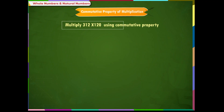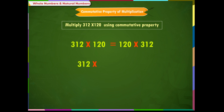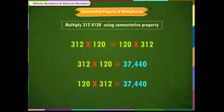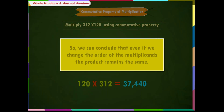Let us take an example. Multiply using commutative property: 312 into 120 is equal to 120 into 312, which equals 37,440. So we can conclude that even if we change the order of the multiplicants, the product remains the same.